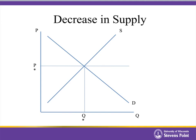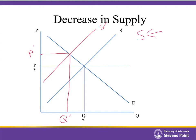Our final basic change is a decrease in supply. Perhaps inputs of production become more costly, or firms leave the market. If we have a decrease in supply, the supply curve moves to the left, and if the price didn't change, now we have a shortage, putting upward pressure on the price. The price increases to the new equilibrium, and we see a resulting decrease in quantity. Supply has decreased, so the equilibrium price goes up and the equilibrium quantity goes down. As you work through these problems, it's always a two-step process: first, which curve shifts and in which direction? And second, how does that change the equilibrium price and quantity?